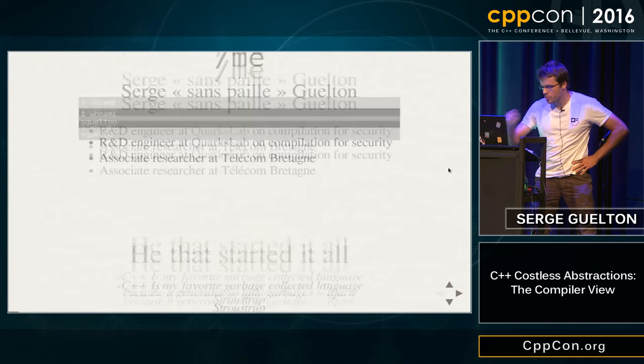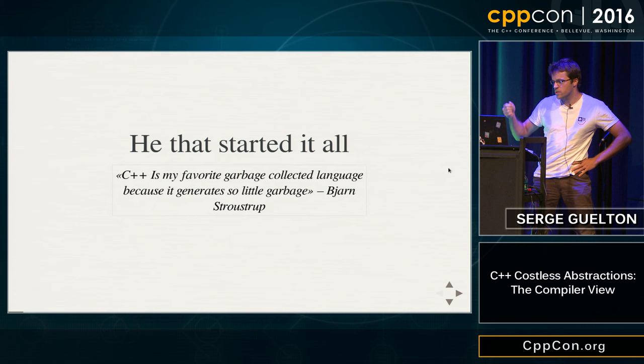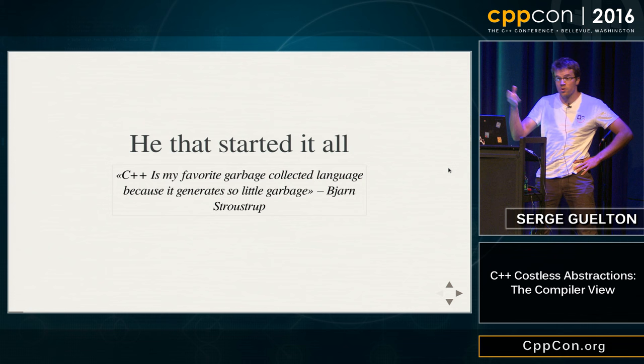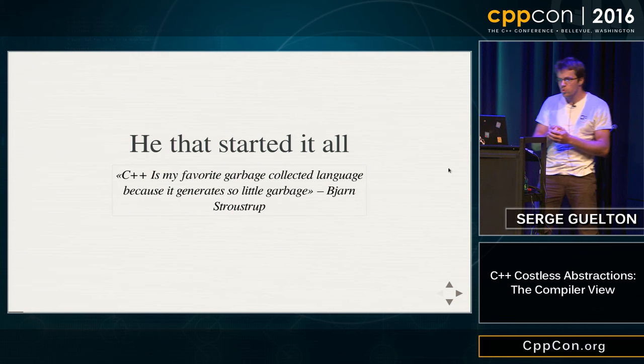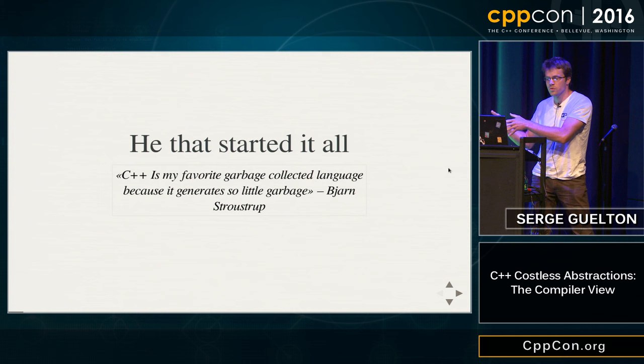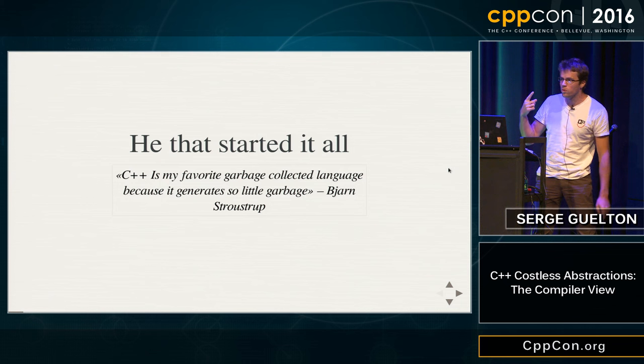There is this famous quote: 'C++ generates so little garbage.' Well, it doesn't really give tribute to the important actor here, because the language is not responsible for generating anything. It just states the grammar, the things you're supposed to do, but nothing in the specification says you must have efficient code. C++ is a nice language because it makes it possible for a compiler to generate little garbage.